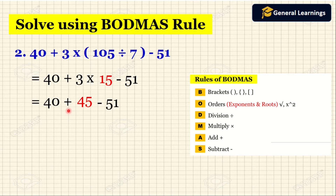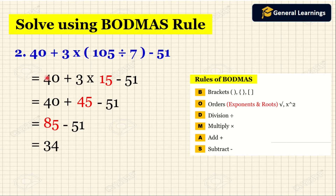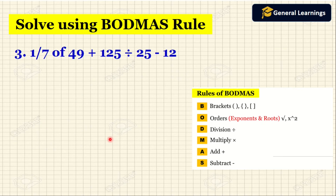Now the operations we have are plus and minus. First we need to do addition: 40 plus 45 equals 85. Then we write minus 51 as it is. Now we do subtraction: 85 minus 51 equals 34. When we simplify this question we get the answer as 34.